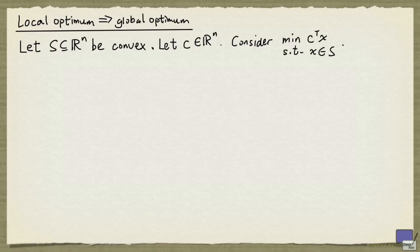We will now look at a couple of situations that will show why convex sets are attractive in the context of optimization. The first is the following: let S be a convex set in Rn, let c be an element of Rn. Consider the optimization problem minimizing c transpose x subject to x being an element of S.